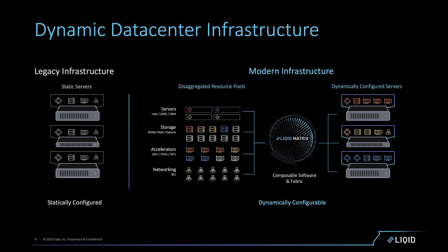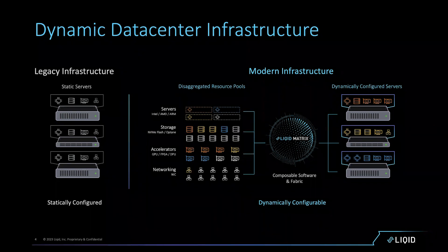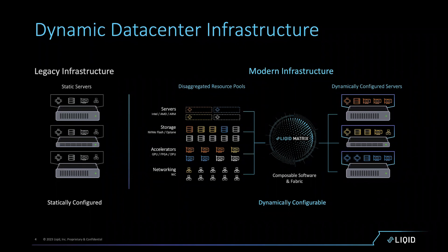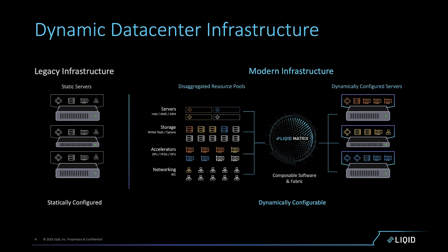If we need to add another GPU to that server for an AI-centric workload, we're not sending a human down to the data center. We are reprogramming the fabric and adding or removing devices from the server depending on what the workload requires. That's how we define a disaggregated architecture — Liquid is focused on delivering both the technology that enables hardware disaggregation and the software that allows you to recompose into servers.